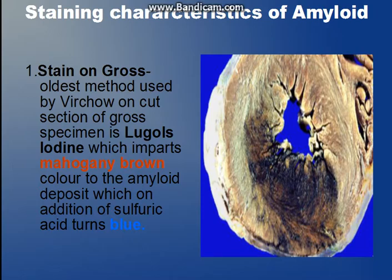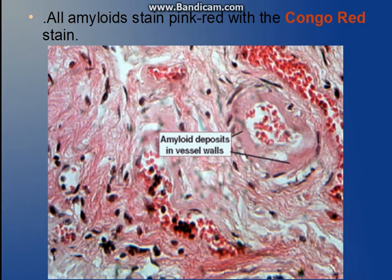Now going to microscopy. On H&E section, the amyloid appears eosinophilic in color. That is not a specific test because all proteins stain pink in color. So we have to go for Congo red staining, in which amyloid appears pinkish red in color.